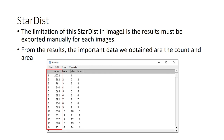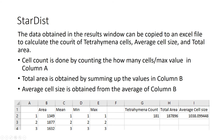The important data are the count and the area showing the area of each cell. The data obtained in the results window can be copied to an Excel file to calculate the count of Tetrahymena cells, average cell size, and total area. The cell count is done by counting how many cells there are, or the max value of column A. In this image, the Tetrahymena count is 181, the total area is 187,896 pixels, and the average cell size is 1,038.099 pixels.